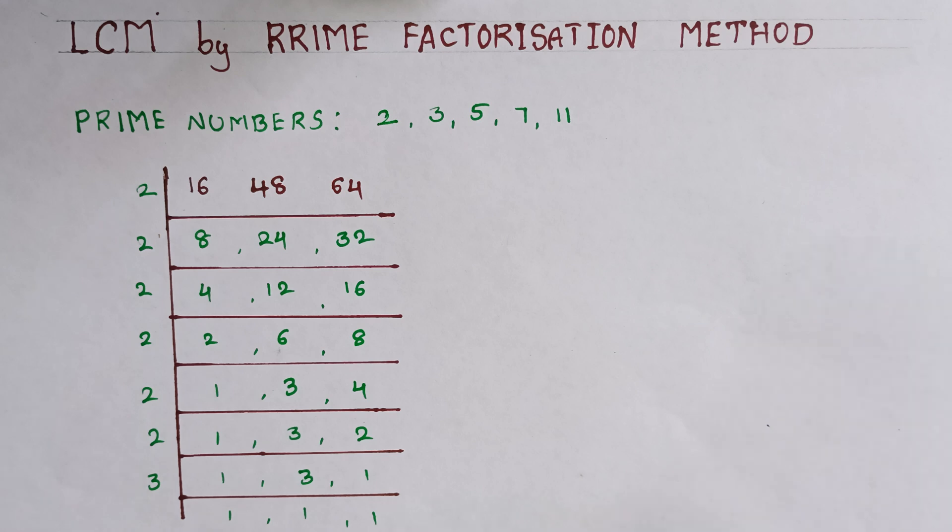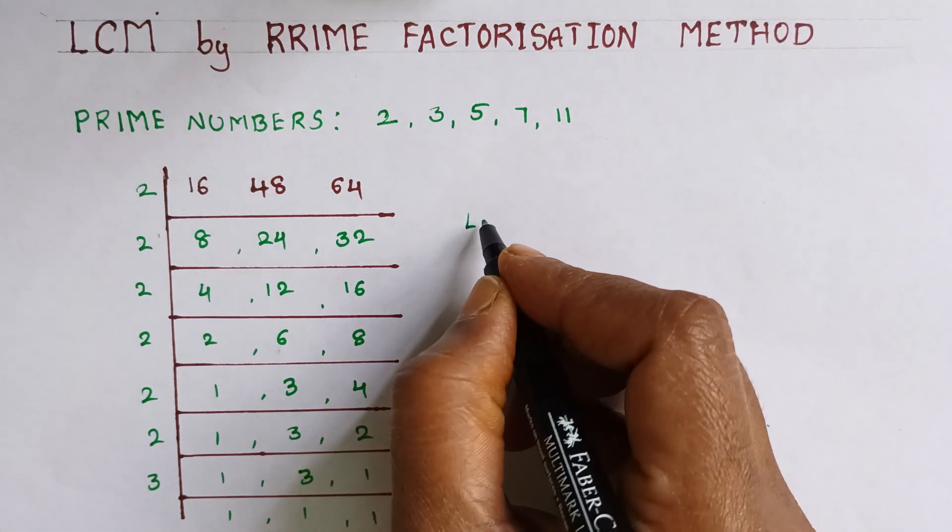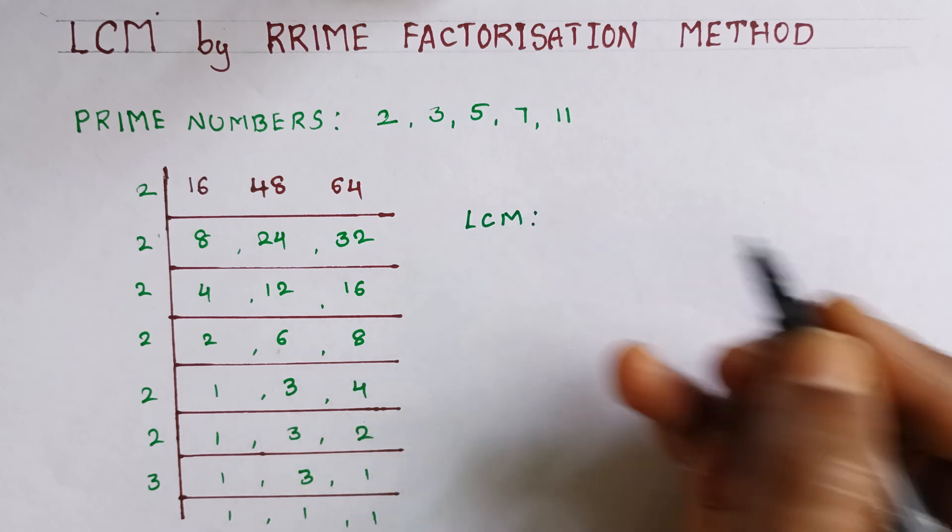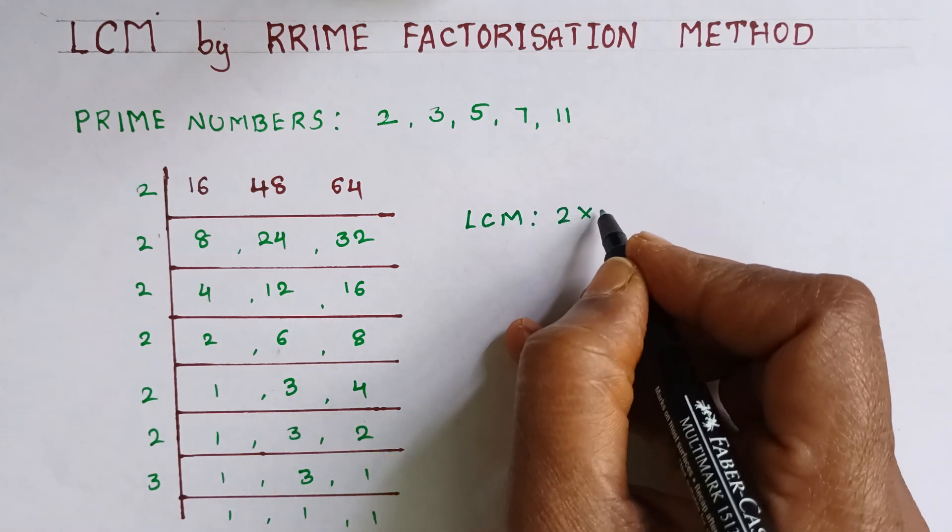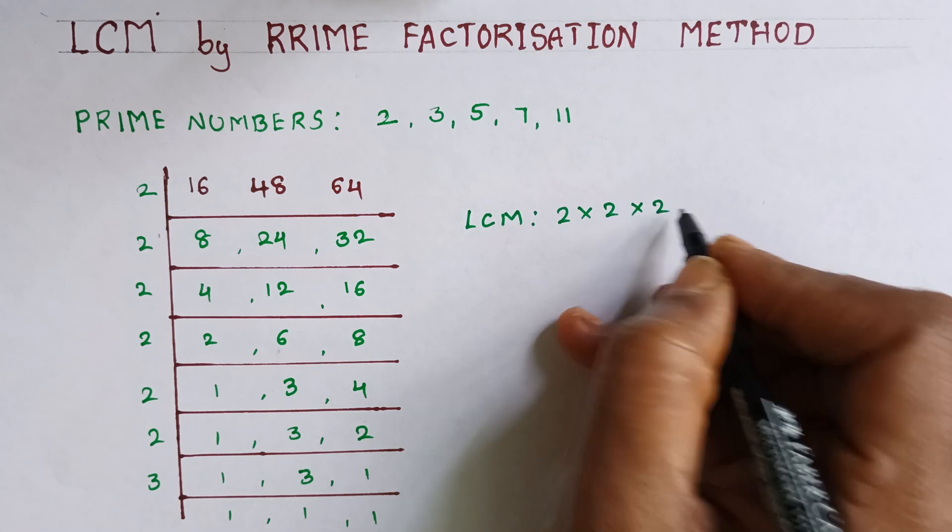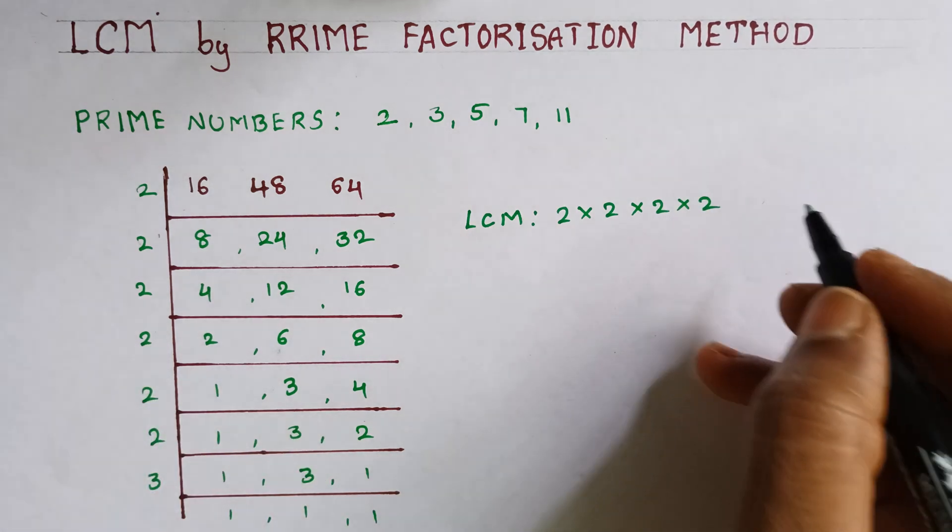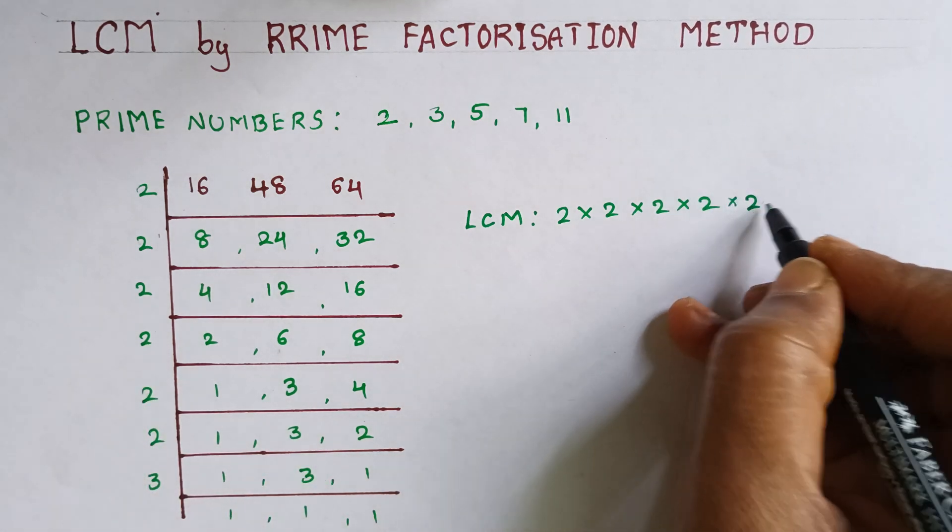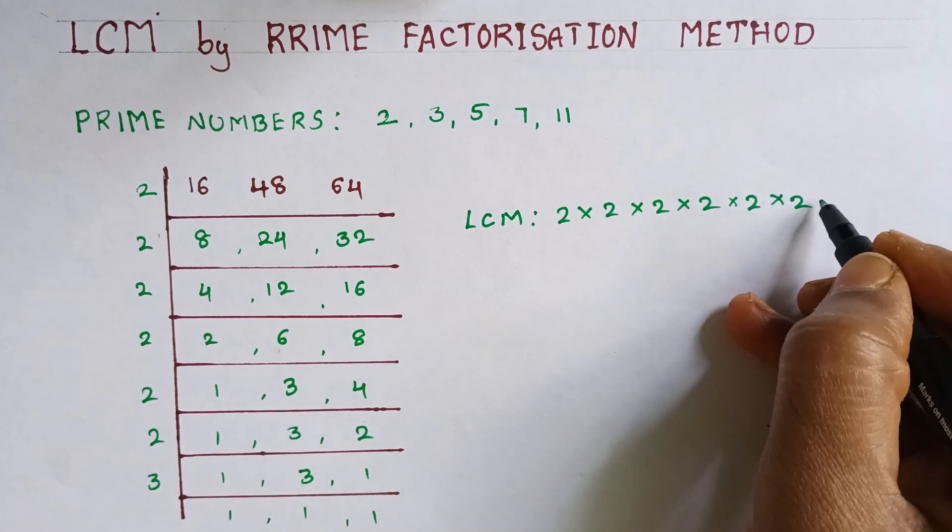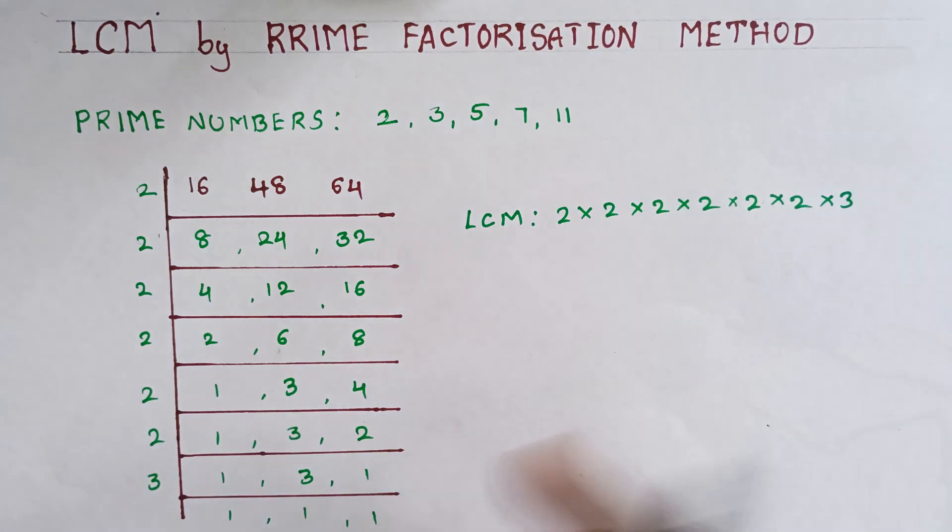The LCM by the factorization method: one, two, three, four, five, six - five sixes and one more three is there. And these are one into one into one, which will be one only.